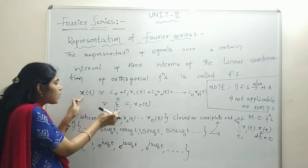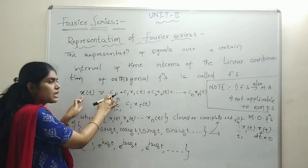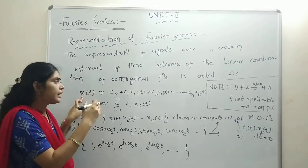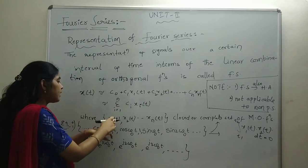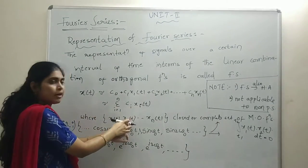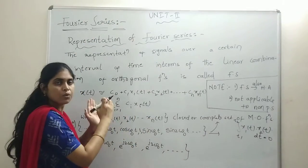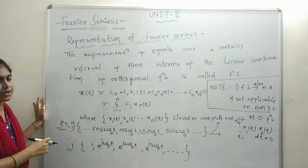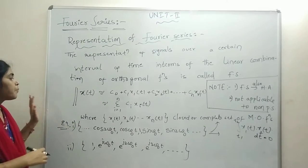Now the signal can be approximated as a linear combination of these orthogonal functions. Here C0 can be zero — after calculating we may get it as zero. The constants C0, C1 multiplied with the first orthogonal function, C2 multiplied with the second function, and so on up to CN — however many orthogonal functions there are, that many constants will be there. The combination of all those is nothing but your signal approximation.